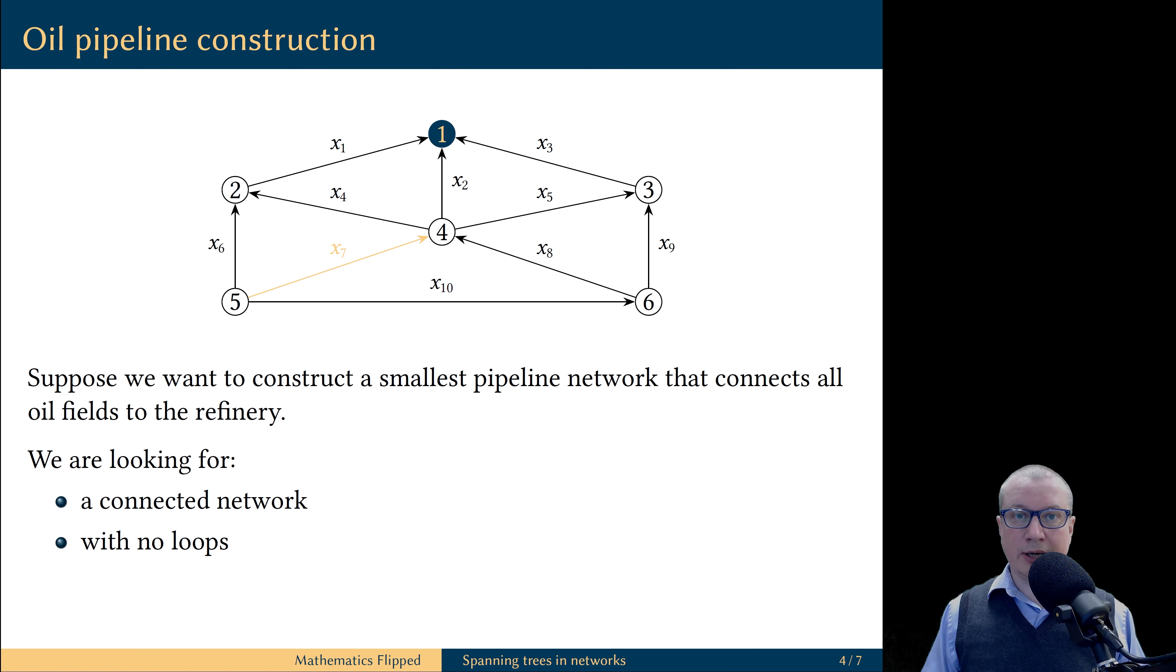So the optimal pipeline network, a smallest pipeline network, has the following properties. It is a connected network and there are no loops. Connected network means that the branches in the network span all nodes of the network.